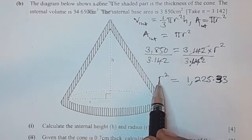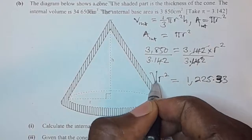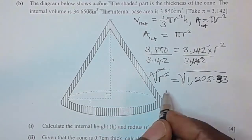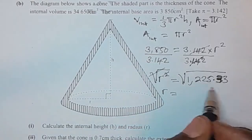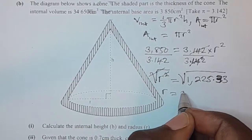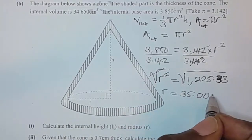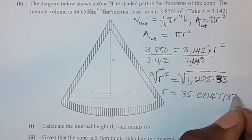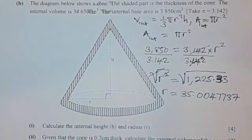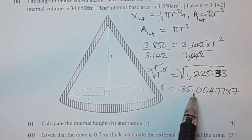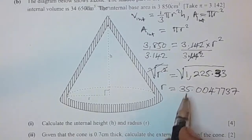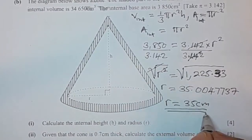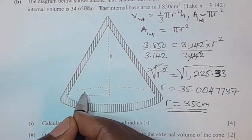We're looking for the radius, not the radius squared, so we take square roots on both sides to undo the square. We remain with r equals the square root of 1,225.33, which on the calculator gives 35.004737. We can round this to the nearest whole number, so the radius is 35 centimeters.